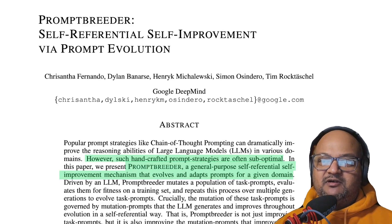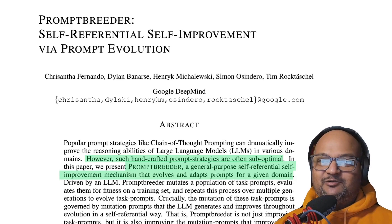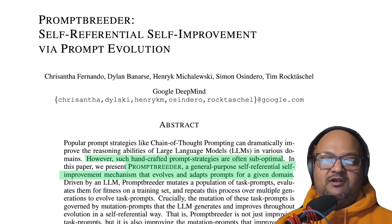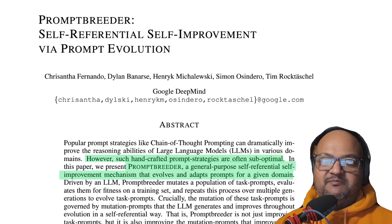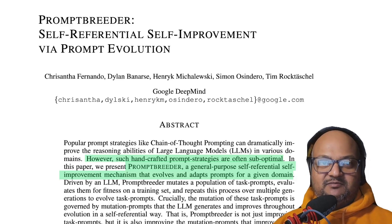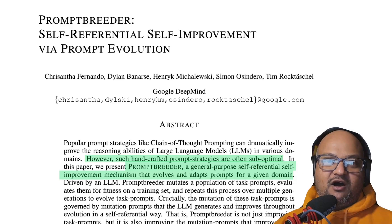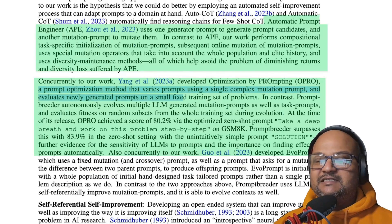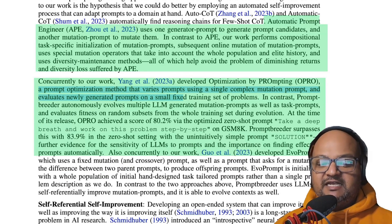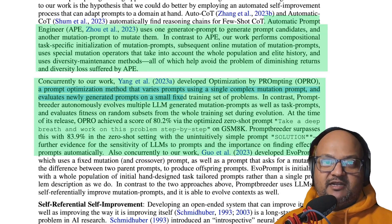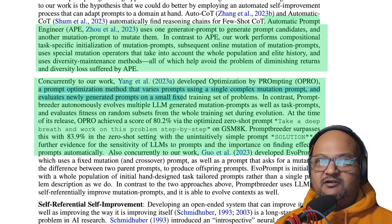The authors in this paper are proposing a system called Prompt Breeder — a somewhat unsettling name — that uses the large language model itself to generate and evolve prompts for a given domain. So it makes it less of a guessing game and puts the burden on the system, driven by the LLM, to find an optimal prompt. This basic idea of using the LLM itself to generate prompts, generate variations of prompts, critique them, and evaluate them is one that has been tried in various shapes by other authors as well.